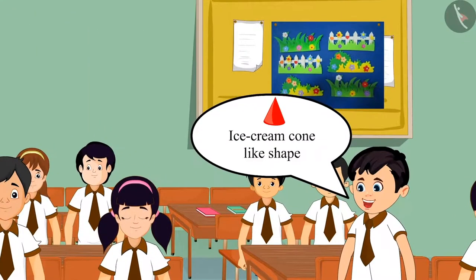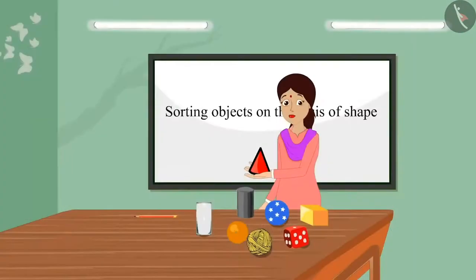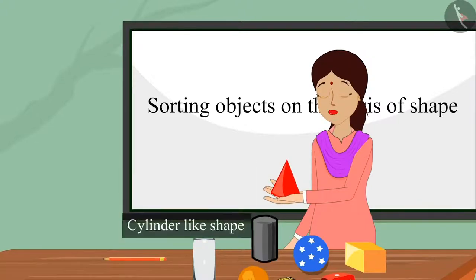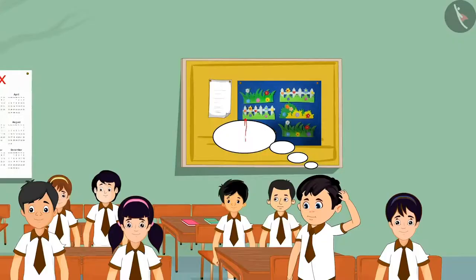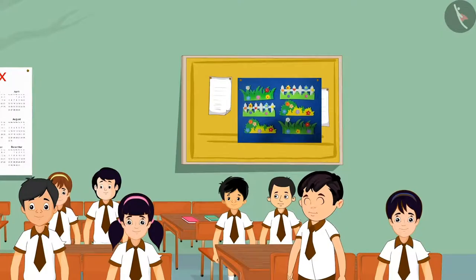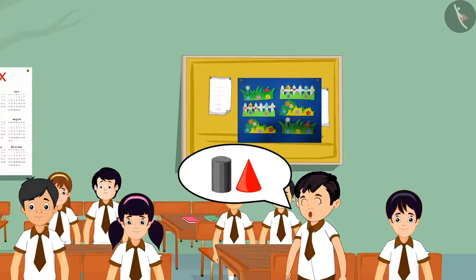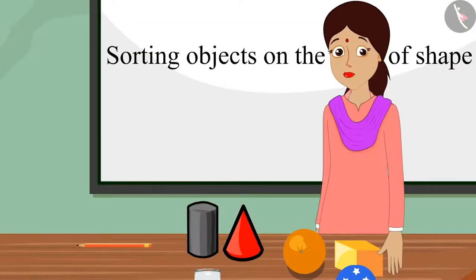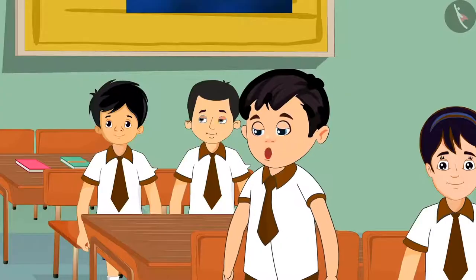A student says: 'Teacher, this has an ice cream cone-like shape.' The teacher replies: 'Very well, Choto! This has a cone-like shape.' The teacher then points out that Choto did not understand the difference between the cylinder and cone shapes. Choto says: 'But both these shapes look alike — why do you think these two shapes are the same?'